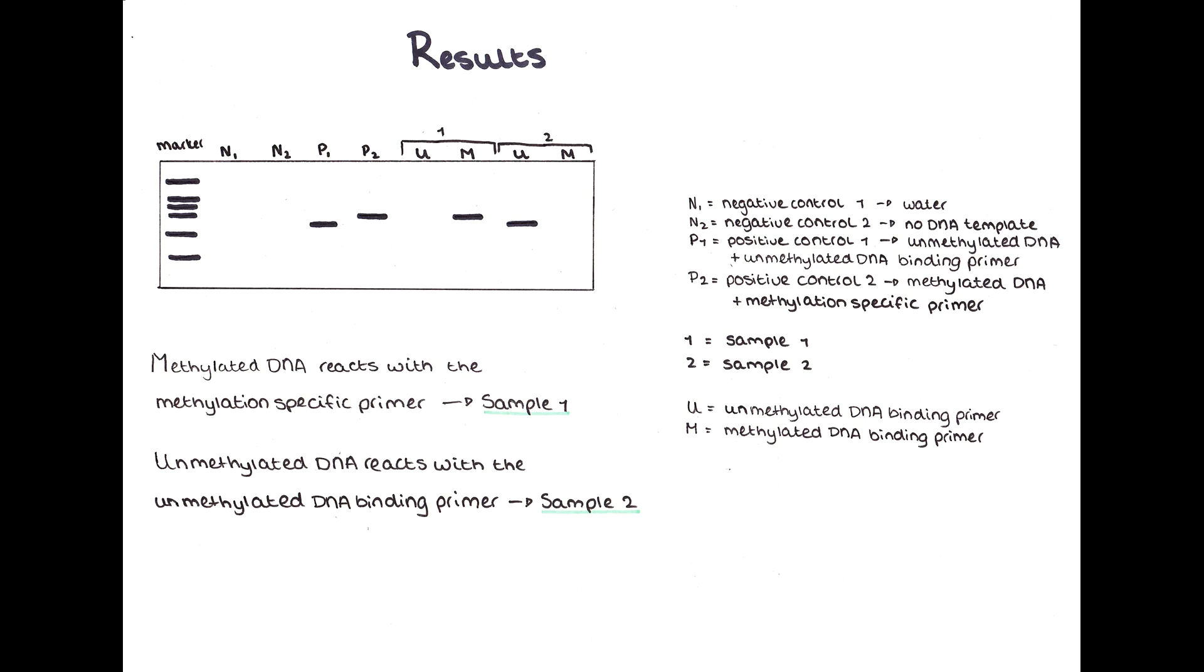Sample 1 contains methylated DNA, which means it will only show up in the methylated column and not in the unmethylated column.